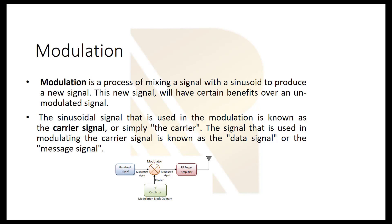The sinusoid signal that is used in the modulation is known as a carrier signal — we call this the carrier. The signal that is used in modulating the carrier signal is known as a data signal or a message signal.